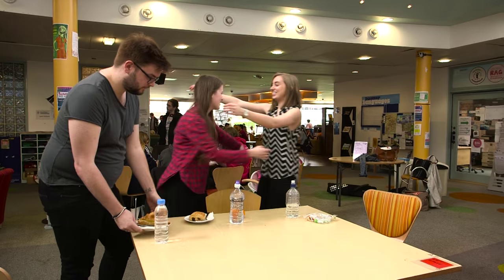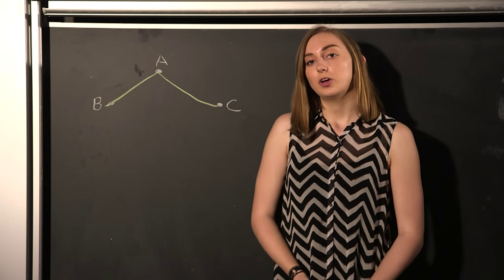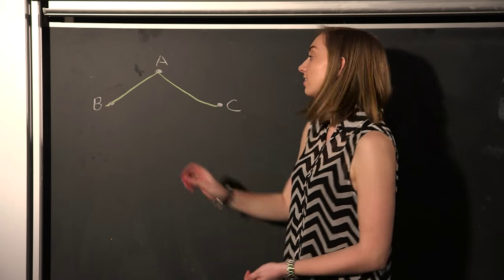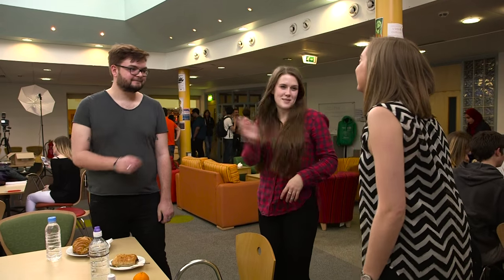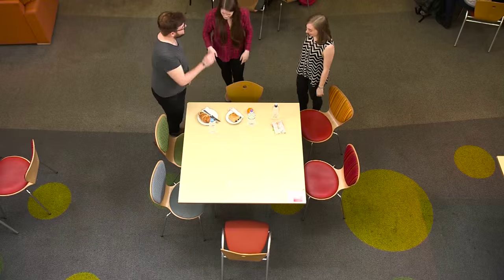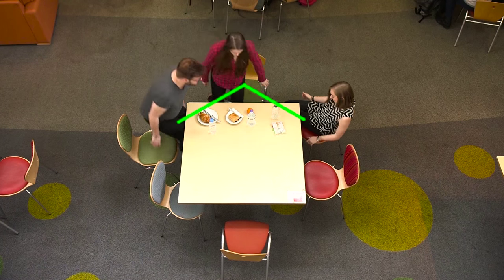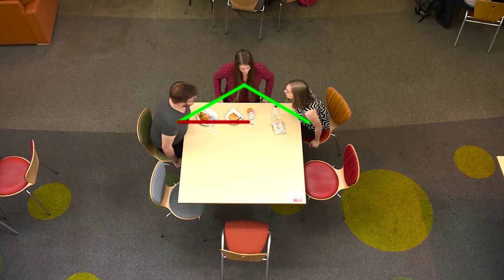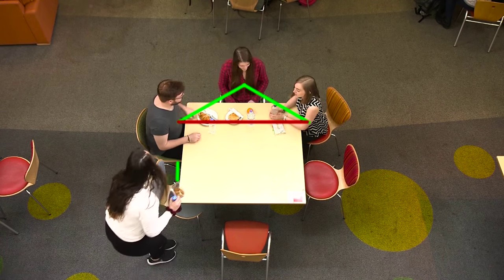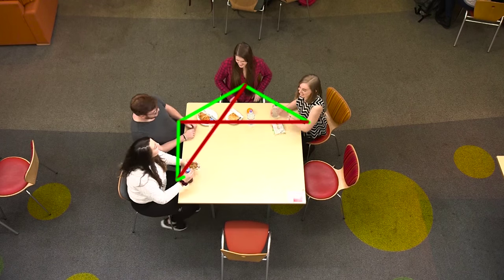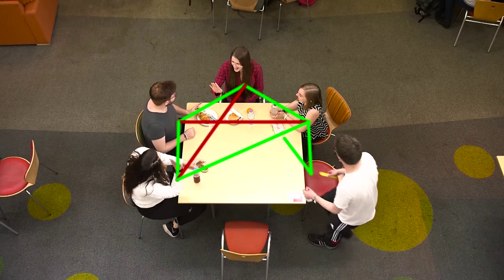We can draw green lines connecting the people who know each other and red lines connecting the people who don't. So in this graph, person A knows person B and person C, but B and C don't know each other. As more people start to arrive, our graph begins to get more complicated as we map out who knows who.